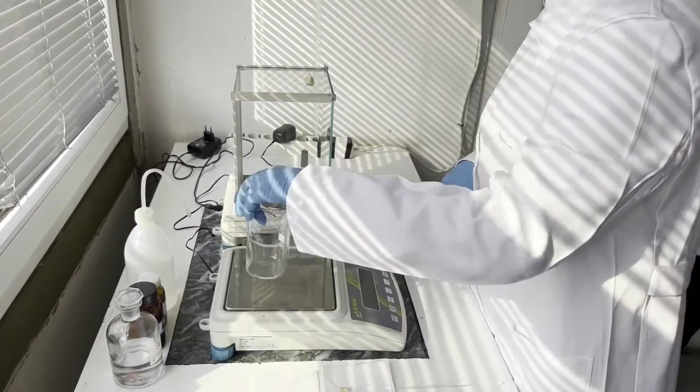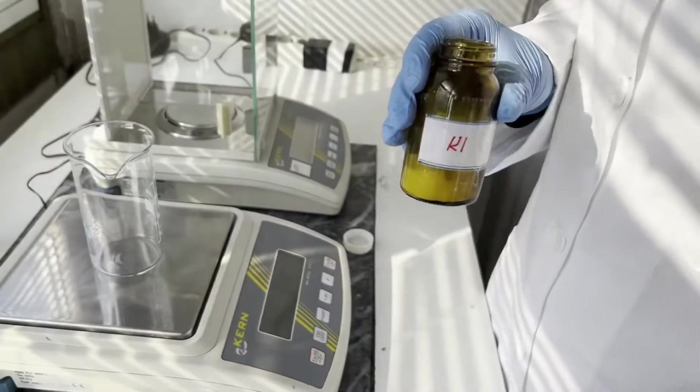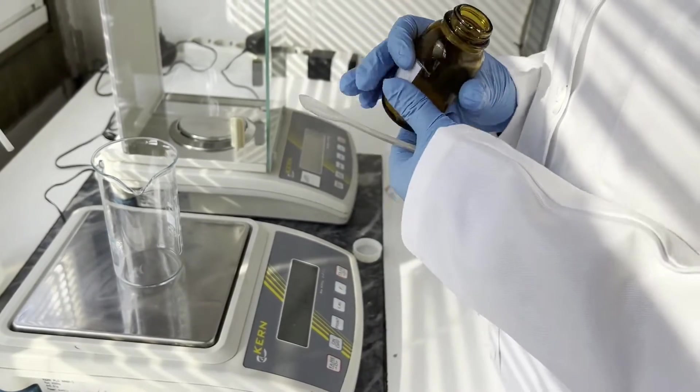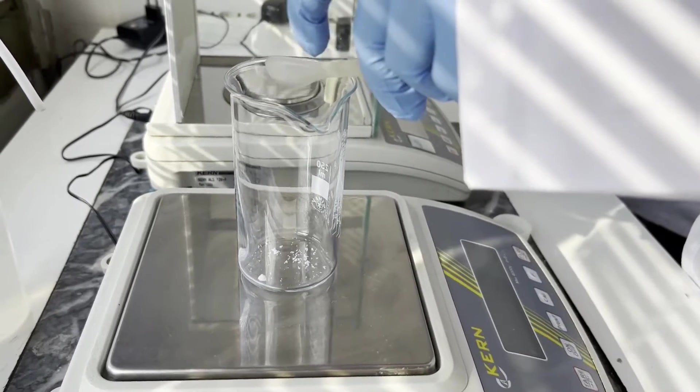First we'll put a clean beaker on the precision balance and tare it. We will pour 4 grams of potassium iodide into the beaker. It will facilitate the solubility of iodine and increase the stability of the preparation.